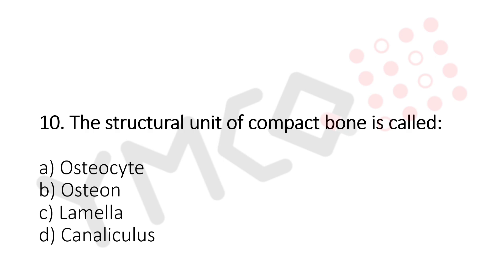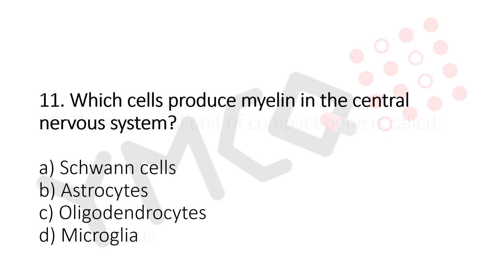Question 10: The structural unit of compact bone is called — Option A: osteocyte. Option B: osteon. Option C: lamella. Option D: canaliculus. The answer is Option B, osteon.